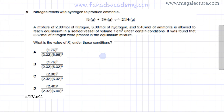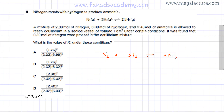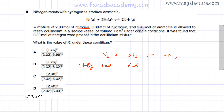Writing down the reaction: N₂ + 3H₂ ⇌ 2NH₃. The initial moles provided are 2 moles of N₂, 6 moles of H₂, and 2.4 moles of NH₃, all added into the sealed vessel.